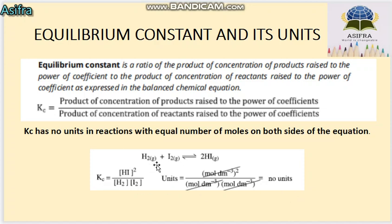For example, consider 1 mole of hydrogen and 1 mole of iodine reacting to give 2 moles of hydrogen iodide (HI). The concentration units are mol per decimetre cubed. When we derive the expression for Kc, the units from the numerator and denominator cancel each other out, so Kc does not take any units.